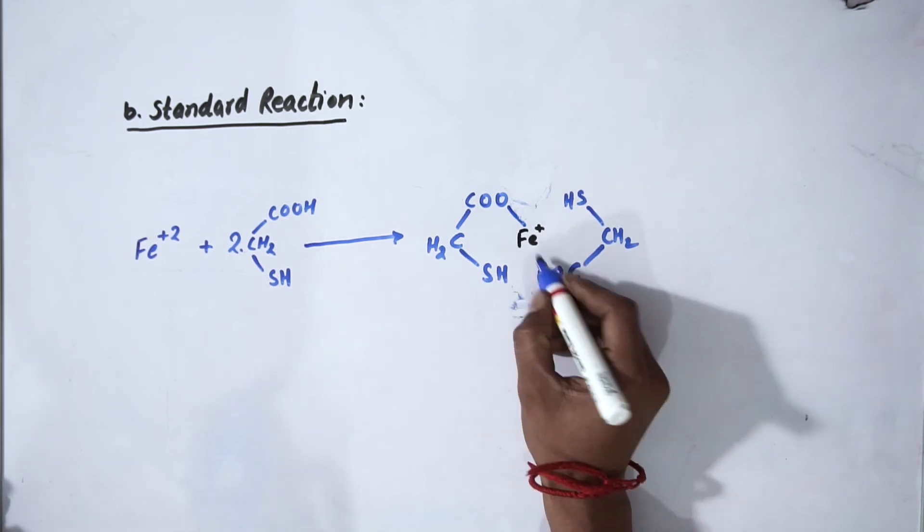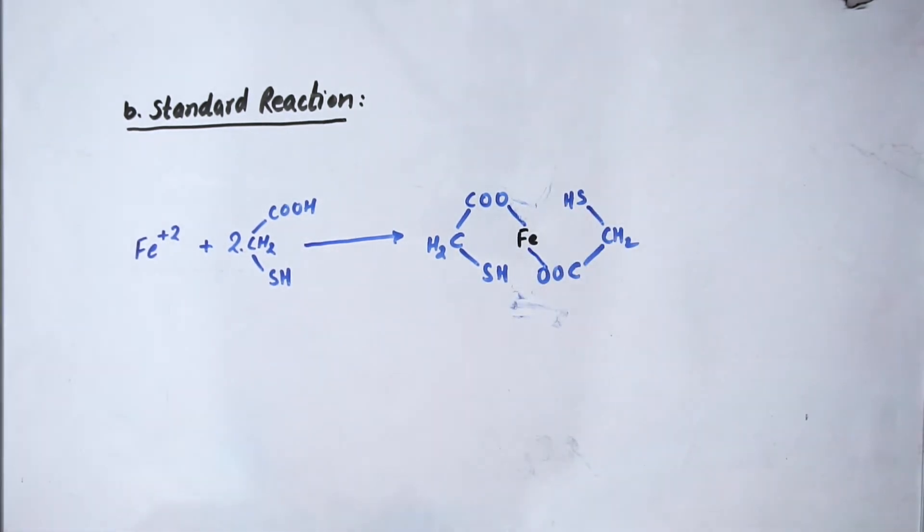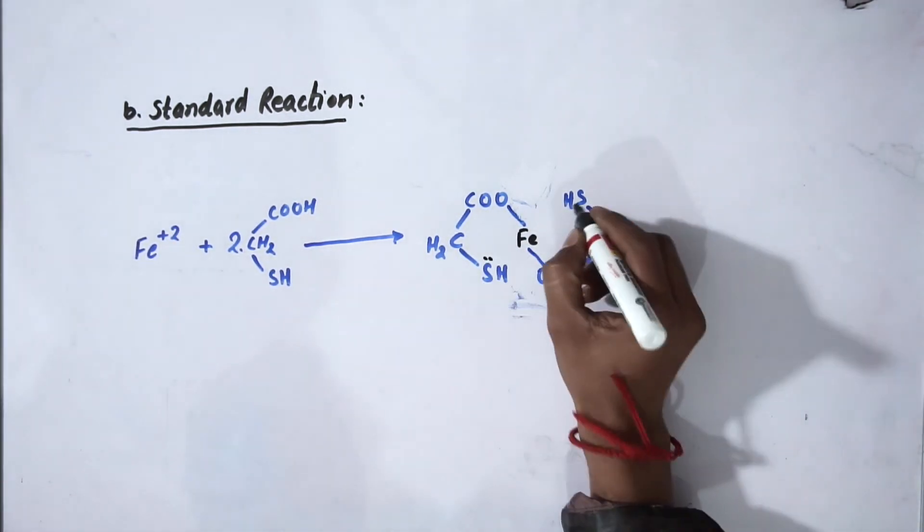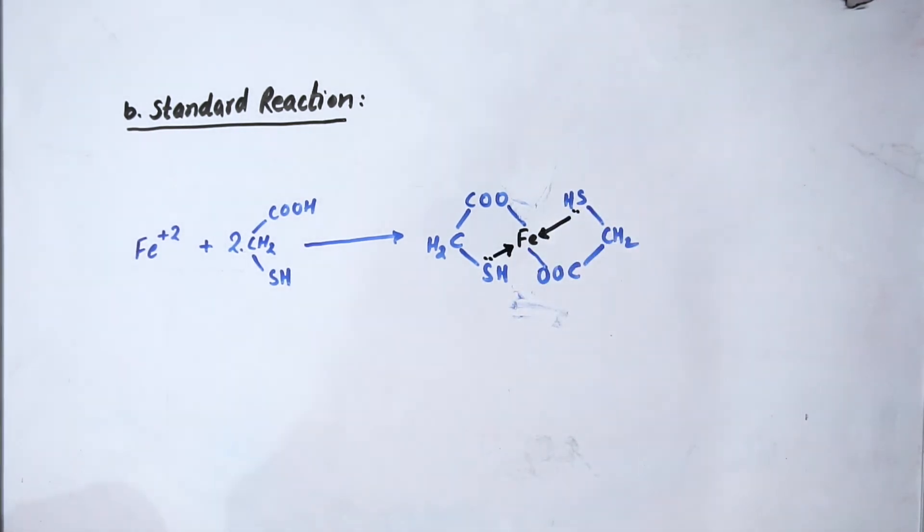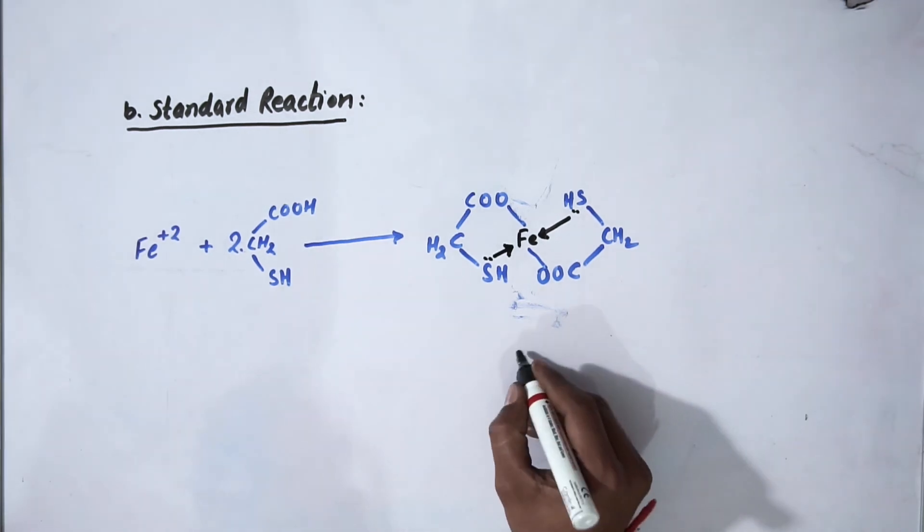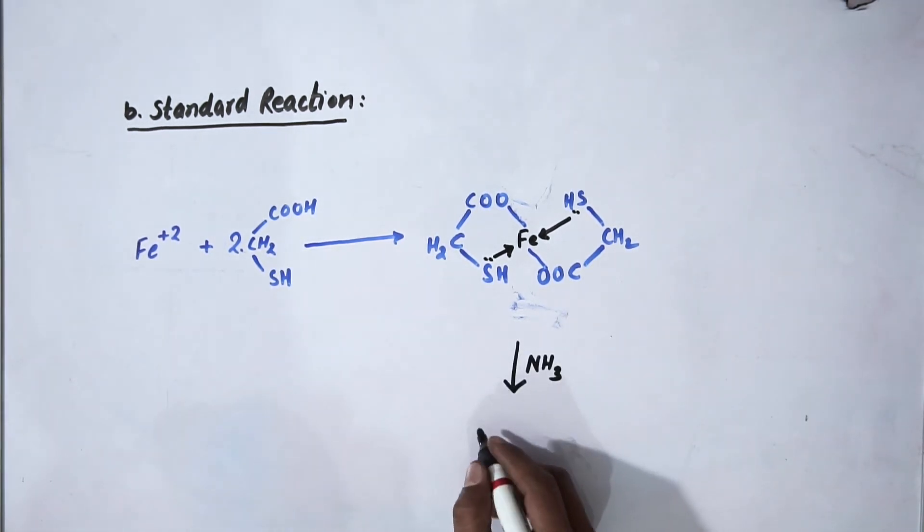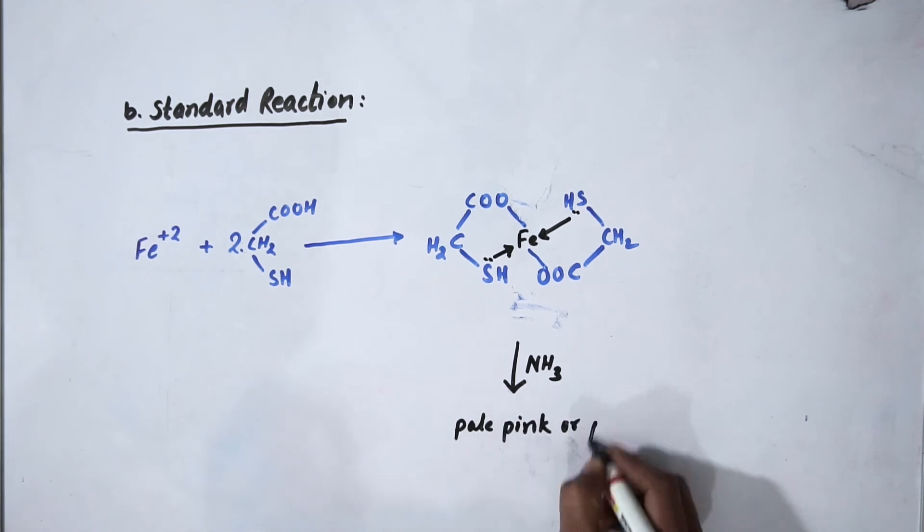The sulfur has a lone pair, so they will share their lone pair with iron. So this is a complex which is formed now. In presence of ammonia, it will produce pale pink or purple color.